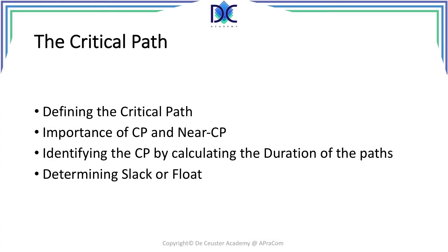Welcome to a more relaxing session. We did a lot of calculations in the previous sessions. We found the critical path of the project, but there is still some work to do. As I mentioned at the end of the last session, we defined the critical path based on zero slack. Now we will define the critical path how it really should be determined. We will look at the importance of the critical path and the near-critical path, and we will do some other calculations using the duration of the different paths through the network — the same type of calculations we will use to determine the slack or float of all the activities.